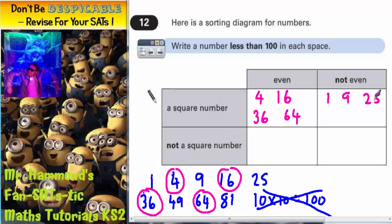25, 49 or 81. Again, you could write any of those numbers in there. As long as they are odd, but they are still square numbers.